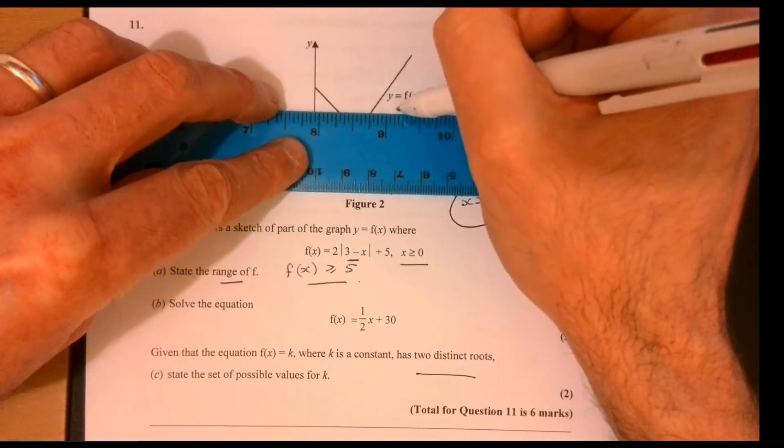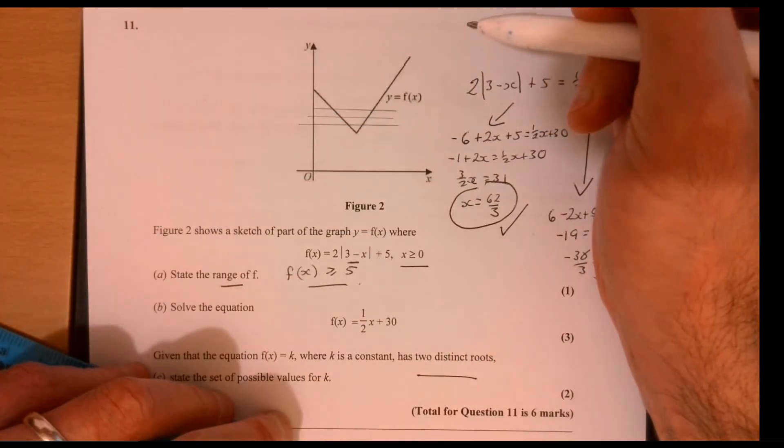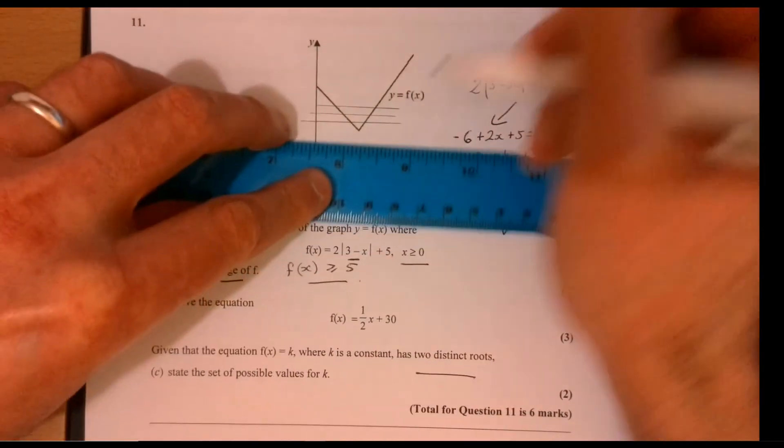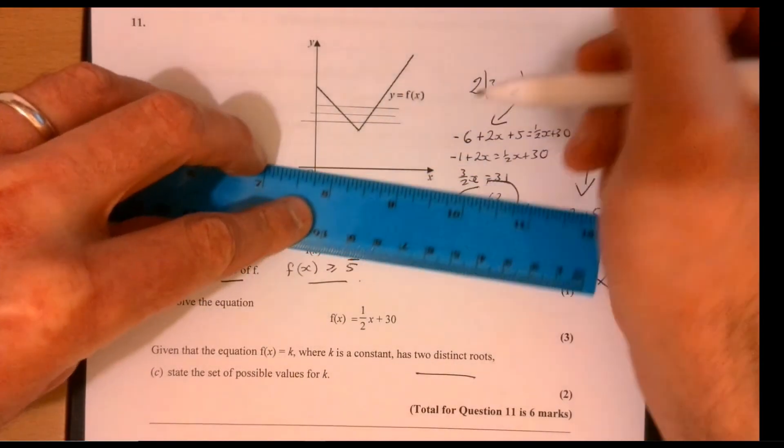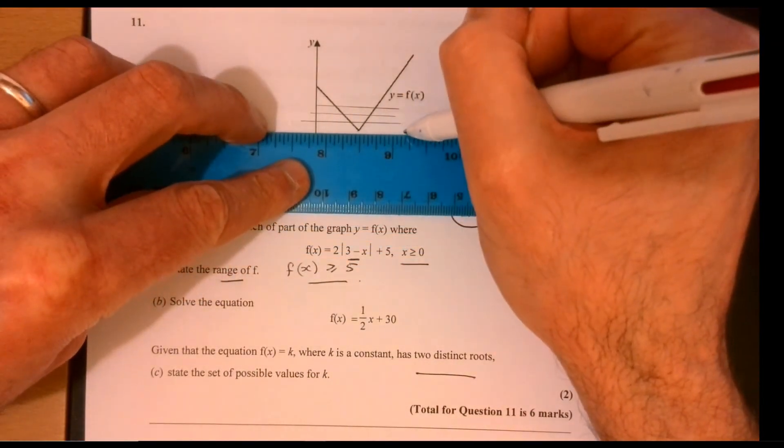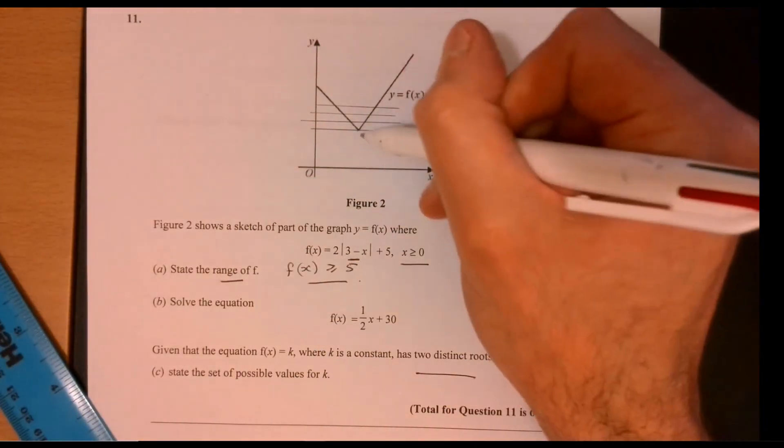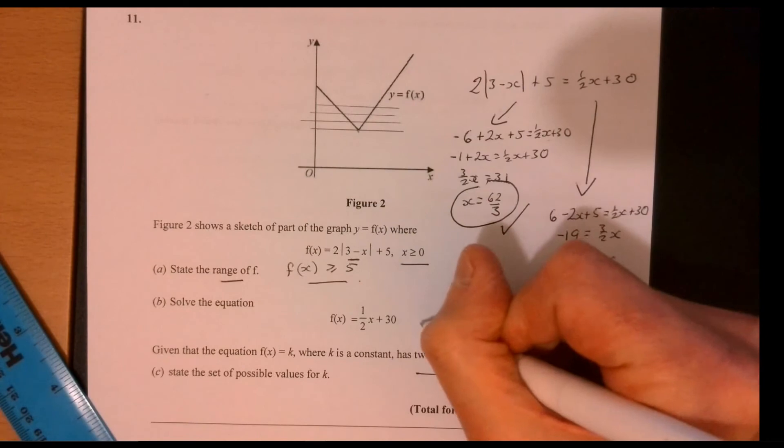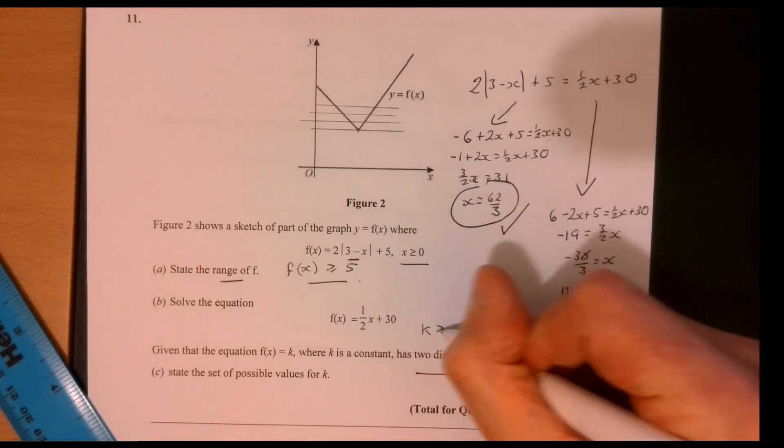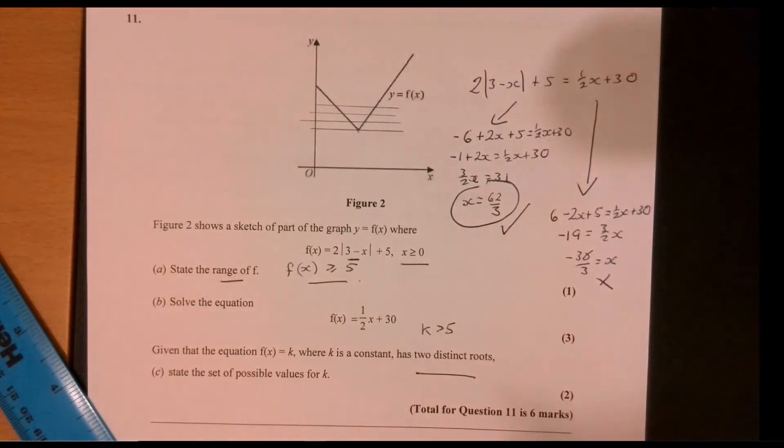In other words, I've got a line that goes across like this somewhere. So what's the minimum it could be? Well, I know this point here is 5. So k has to be more than 5. So we know that. So k is going to have to be more than 5. It can't be 5 because then it would only cross over once.